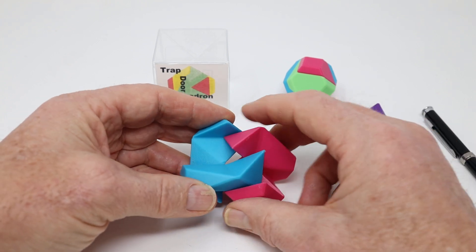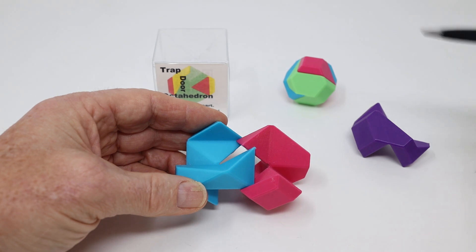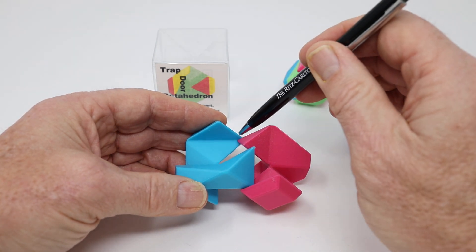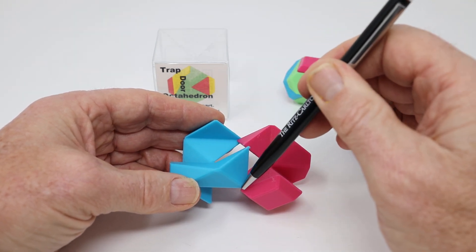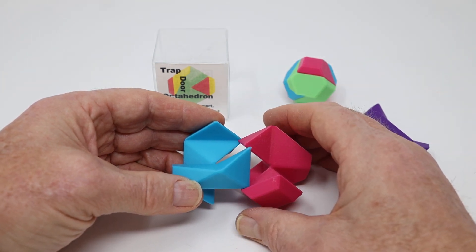They're going to be sliding together like this. One thing to notice is that there are two points, right here and another one down here, that have to be perfectly aligned as these things slide together.